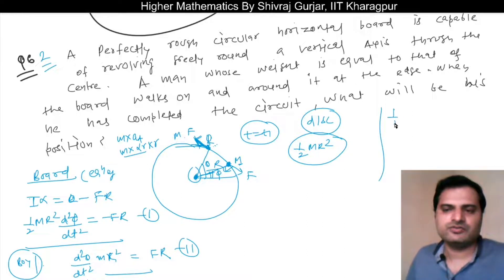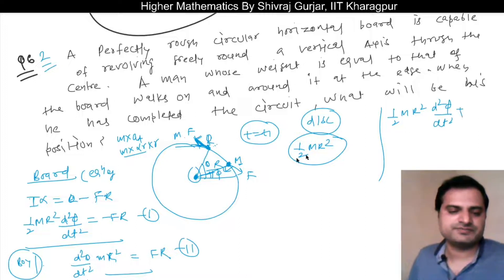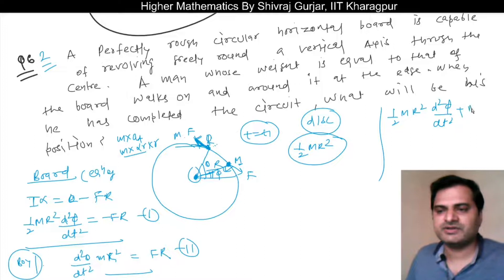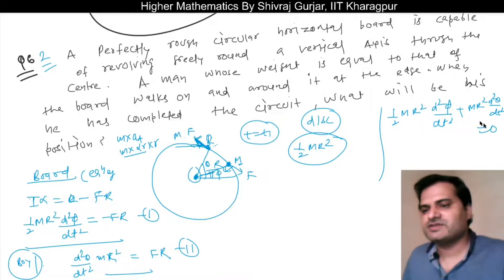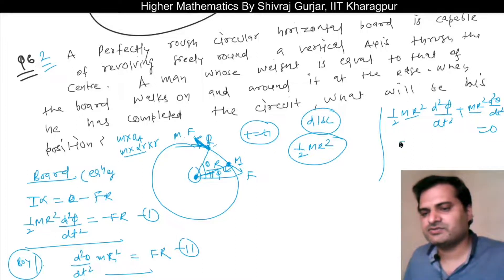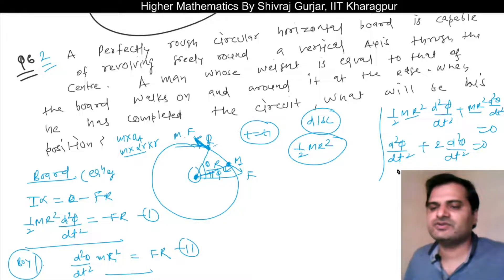Now we add both equations: (1/2)MR² × d²φ/dt² + MR² × d²θ/dt² = 0. Since MR² is common, this simplifies to (1/2) × d²φ/dt² + d²θ/dt² = 0.